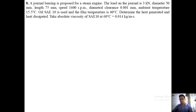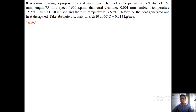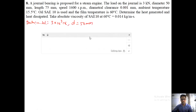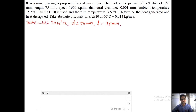Now the last numerical covering journal bearings — the last numerical of the last unit. A journal bearing is proposed for a steam engine. The load on the journal is 3 kilonewton, that is 3 into 10 raised to 3 newton. Length L is 75 mm and speed N is 1600 rpm.